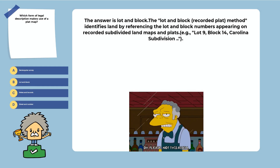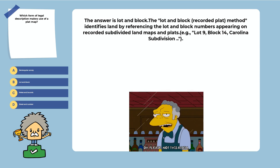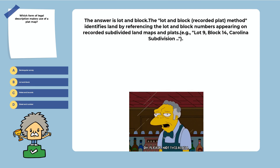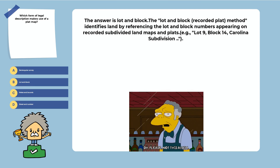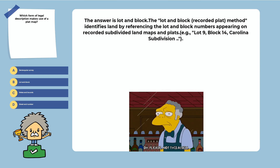Explanation. The answer is lot and block. The lot and block method identifies land by referencing the lot and block numbers appearing on recorded subdivided land maps and plots.